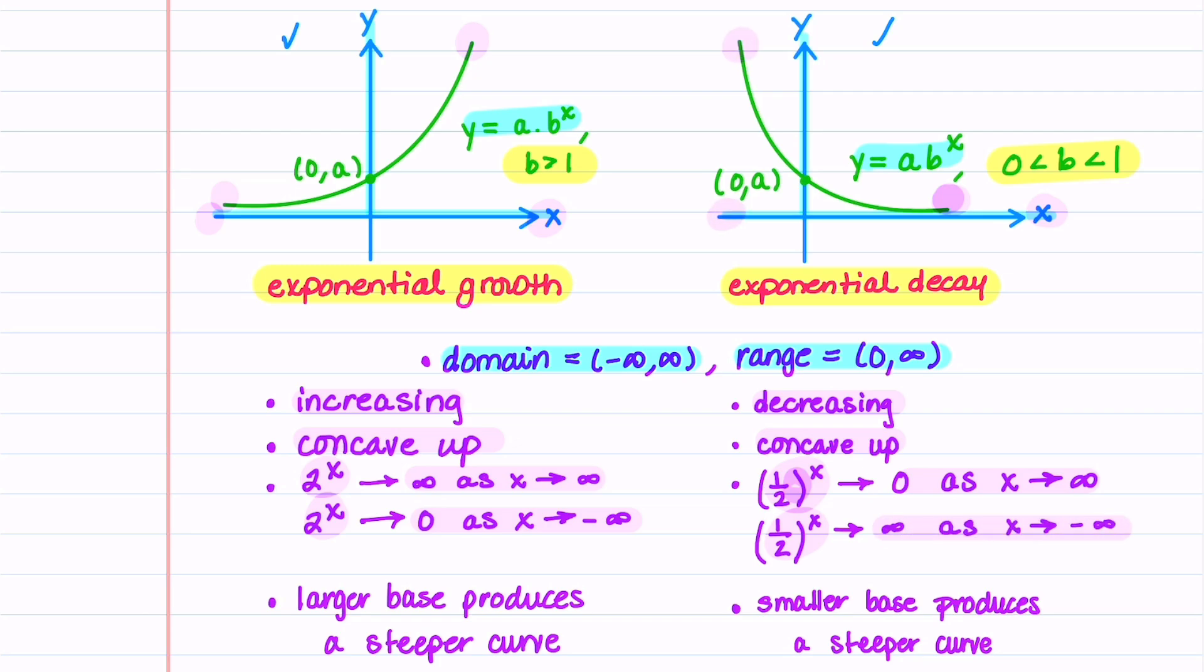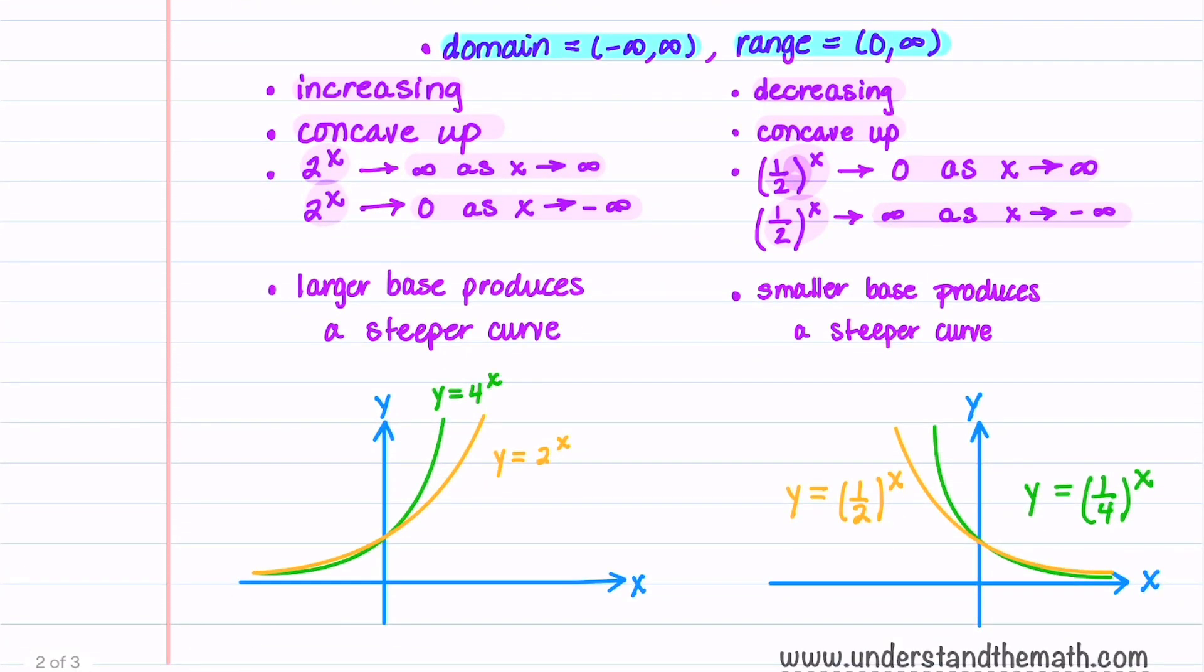Let's now look at the graphs at the bottom of the page. If you have a function that's increasing exponentially, a larger base produces a steeper curve. So 4 to the x is going to be steeper than 2 to the x. If you have a function that decays exponentially, a smaller base is going to produce a steeper curve. The function one quarter to the x has the smaller base and it's steeper than the function one half raised to the x.